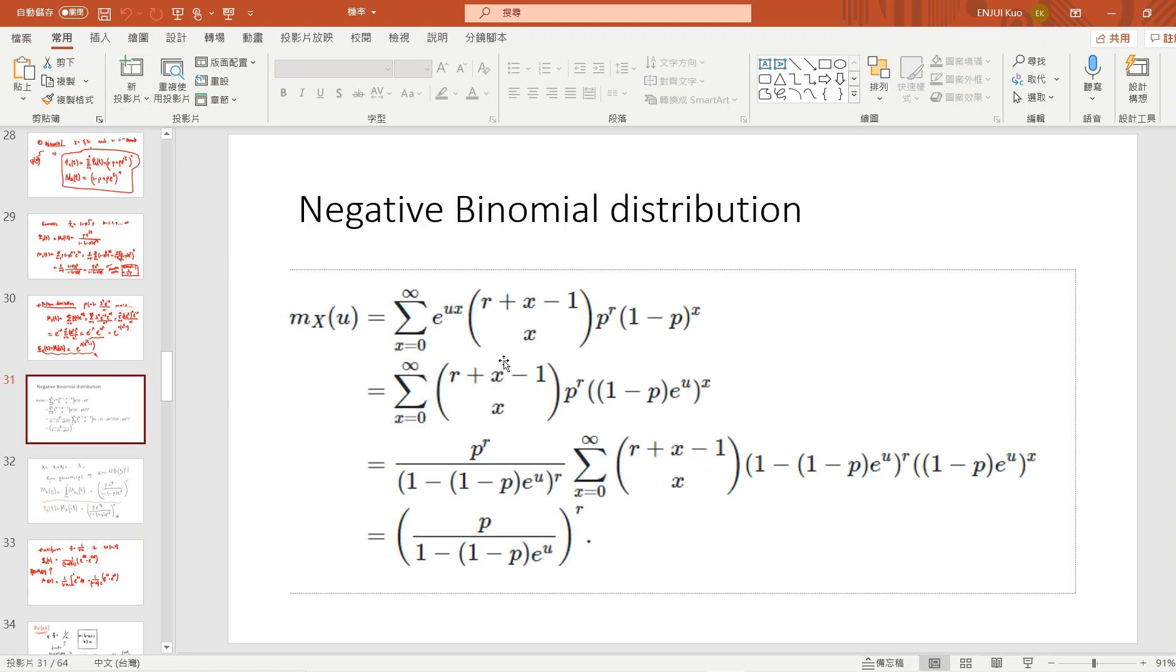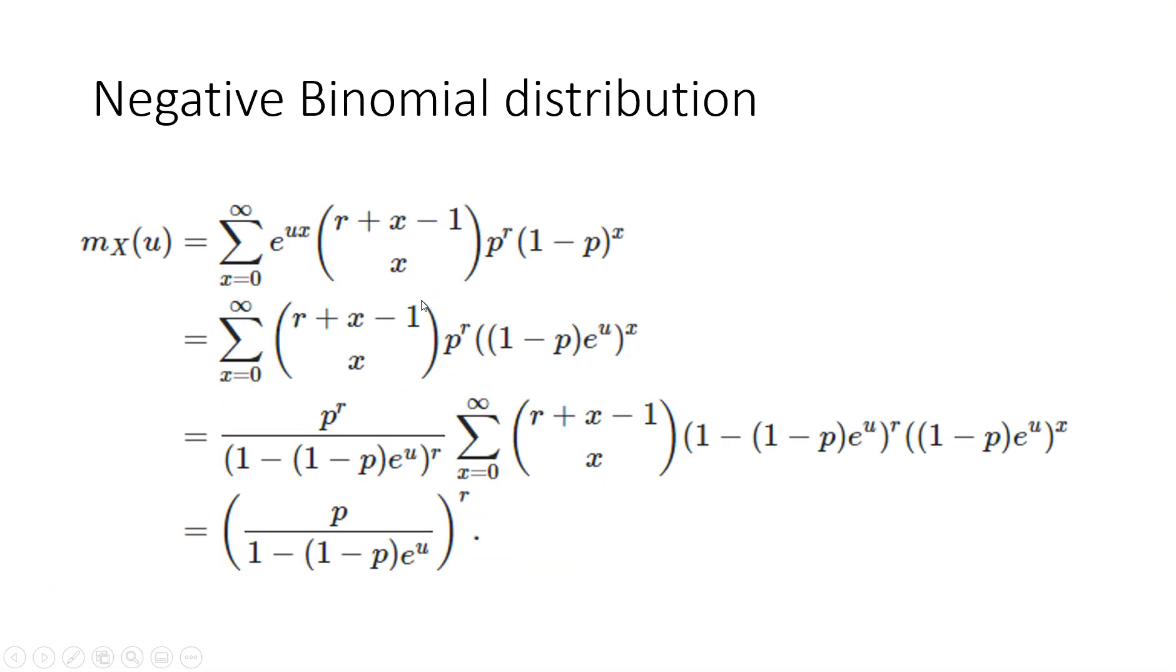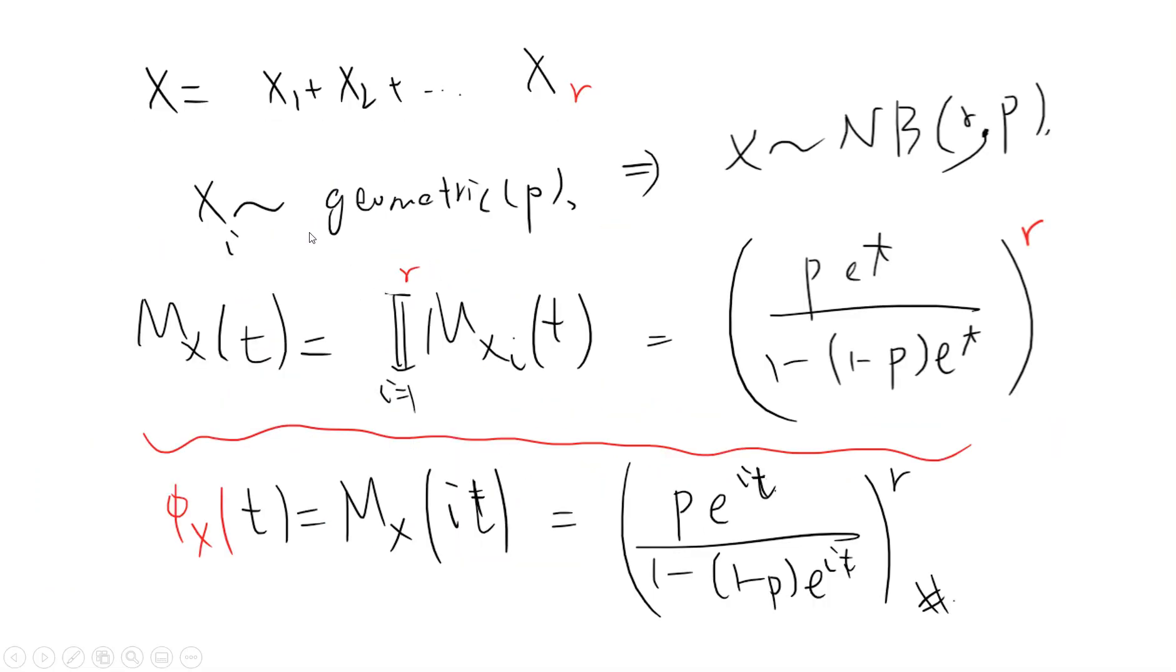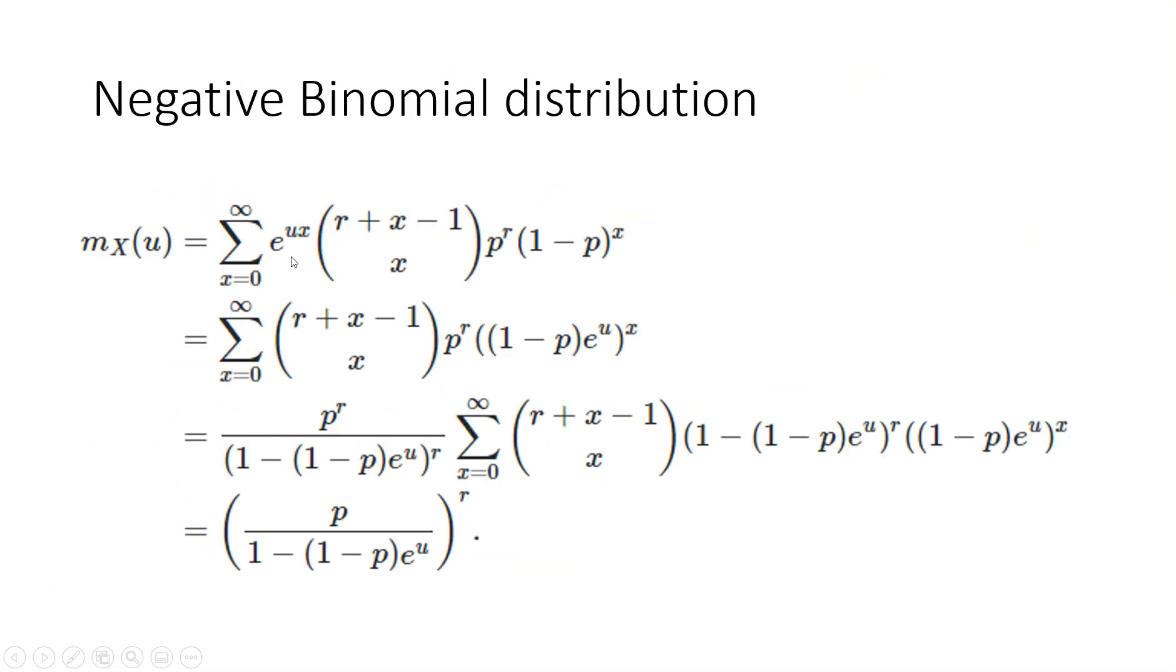The second proof is also common, so let's just see the proof. It's the expectation of e^{ux}. I use u here: e^{u(r+x)} times the binomial coefficient (r+x-1 choose x) times p^r times (1-p)^x, summing from x=0 to infinity. You write it down like this, and then you pull out one of these terms.